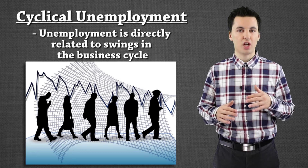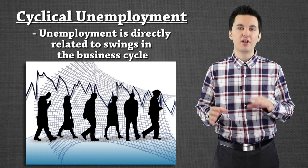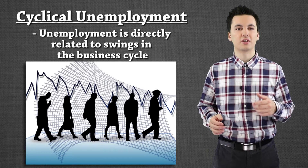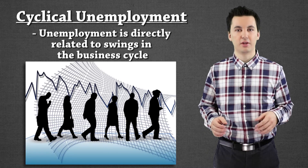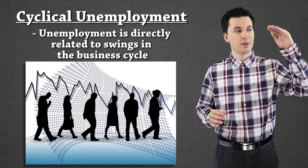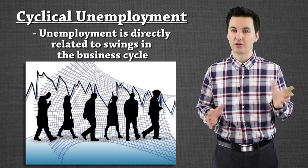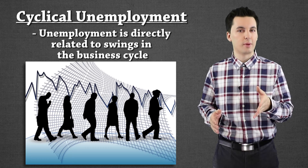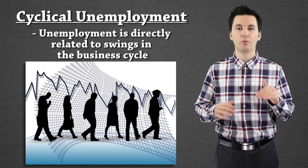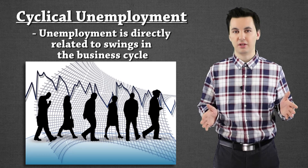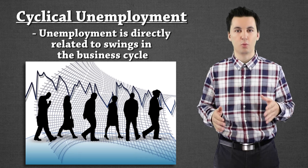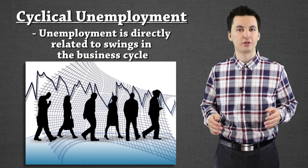Companies hire more people during economic booms and expansions, and then when things slow down, they start laying off workers because demand for extra productivity drops due to changes in consumer spending. This is not structural — these jobs aren't going away forever. And it's not frictional, where you're going to a different job. Cyclical unemployment is connected directly to the business cycle; you're going to see the up and the down — it's like a roller coaster ride.